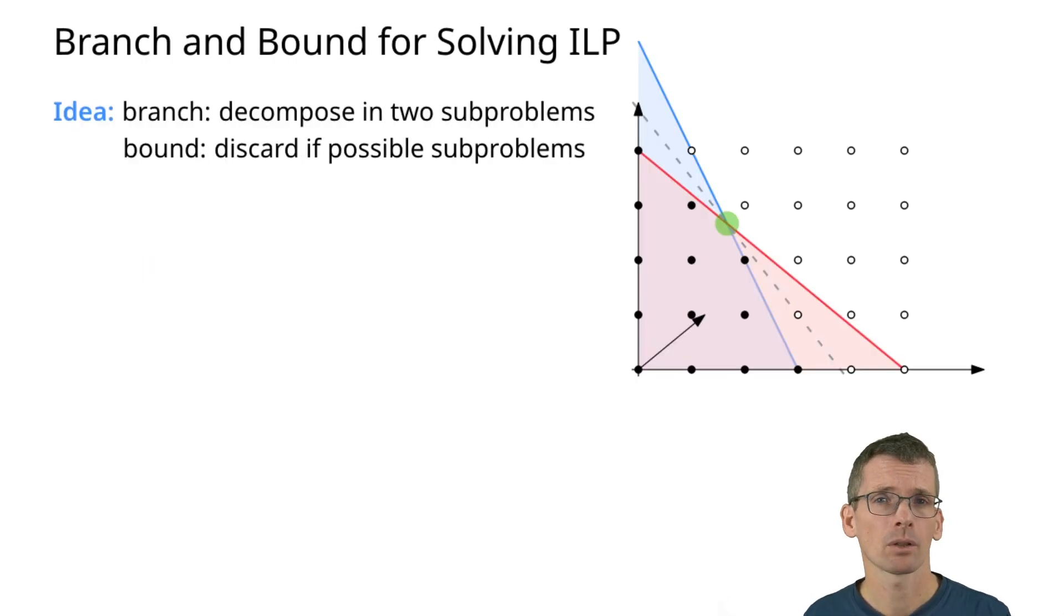What is branch and bound? This is a general technique, not only for ILPs. The idea is as follows: I'm going to decompose my problem into two problems and solve those subproblems, and this might work recursively. But while I'm doing so, I can also keep track of upper and lower bounds of where my optimal solution might lie. Then if for a subproblem it falls outside of those bounds, then I can discard the subproblem.